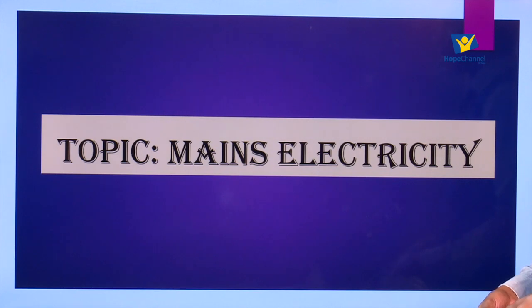Our lesson is going to be from form four topic. Our subject is physics, so join me as we introduce this new topic. Our topic for today is mains electricity. In our high school curriculum this is the last topic in current electricity, and it covers the things which happen and the consumption of electricity in our houses. Current electricity was introduced in form one where the topic is called cells and simple circuits.